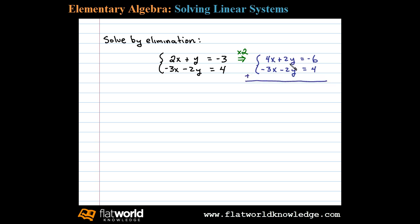If we add these equations together we have 4x minus 3x, well that adds up to 1x. 2y minus 2y is 0 and that'll equal negative 6 plus 4 or negative 2. So we found that x equals negative 2.